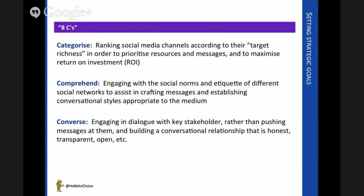Categorising is a process where we set goals by ranking social media channels in terms of their target richness — which channels have the audience segments we most want to connect with and what's the likely ROI going to be? Goals can also be set through a comprehension process — understanding how people act, behave, and talk to each other within a particular network, which helps us craft messages that achieve the desired outcome in an appropriate style.